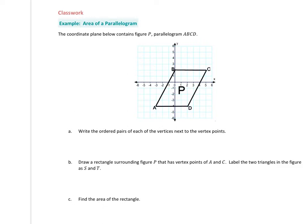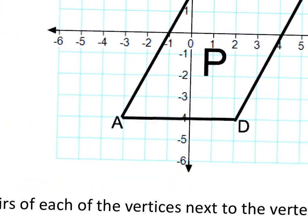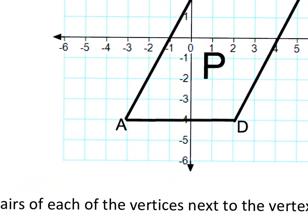The coordinate plane below contains figure P — a parallelogram ABCD. So what are we doing today? We are kind of doing the same thing you guys did yesterday finding area and perimeter of different shapes, except we're talking about areas of parallelograms. I'm going to zoom in and write the points. You'll have to forgive my terrible handwriting because I have a junky stylus, not a fancy one.